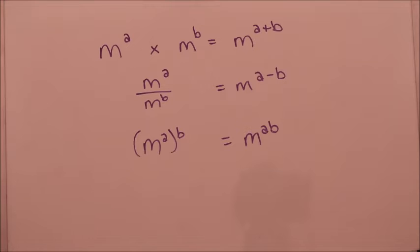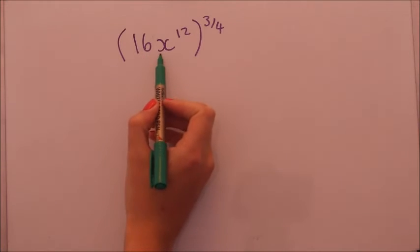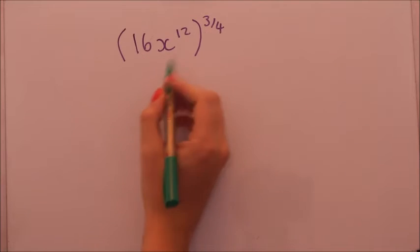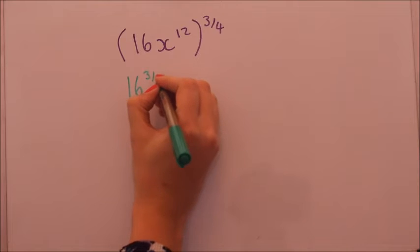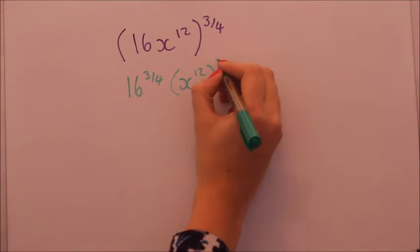So now we're going to do six exam style questions. Please do have a go on your own and come back and compare the answers with mine. Okay so to simplify this out I'm going to take both of the bits individually and raise them to the power. So that's sixteen to the power of three quarters times by x to the twelve to the power of three quarters.